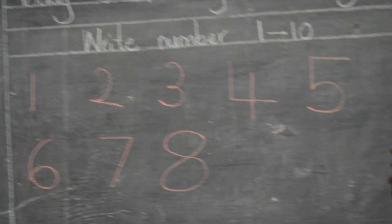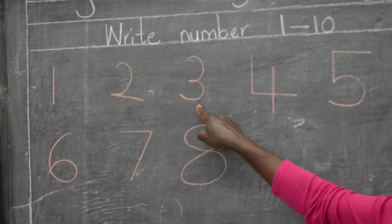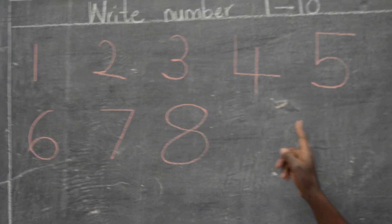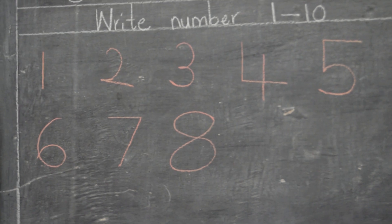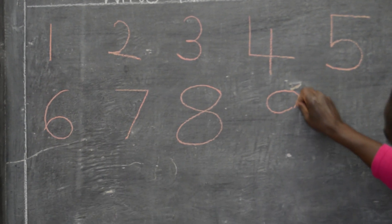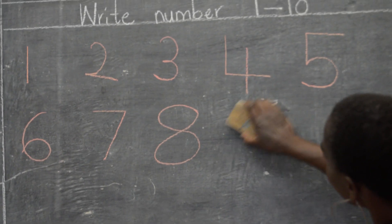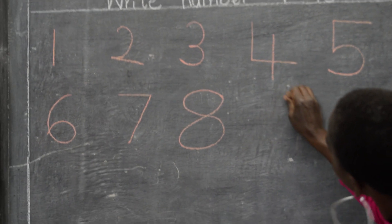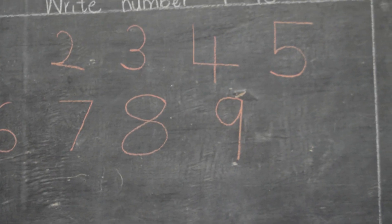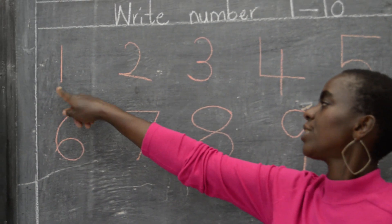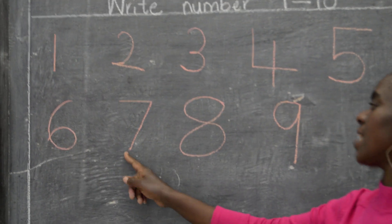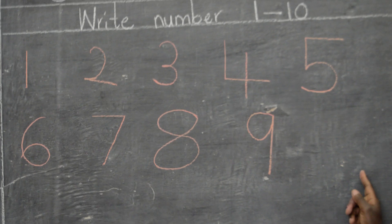We don't know the next number, so we have to start again: 1, 2, 3, 4, 5, 6, 7, 8, 9. And how do we write number 9? You write it round like this, then you go up, and then down. That's how we write number 9. Then write it very well. 1, 2, 3, 4, 5, 6, 7, 8, 9, 10.